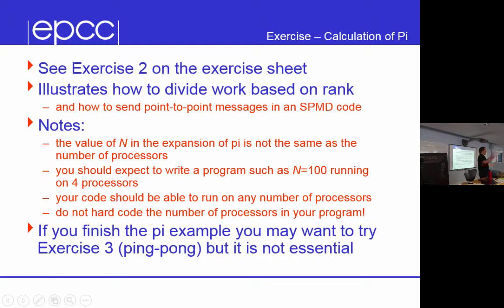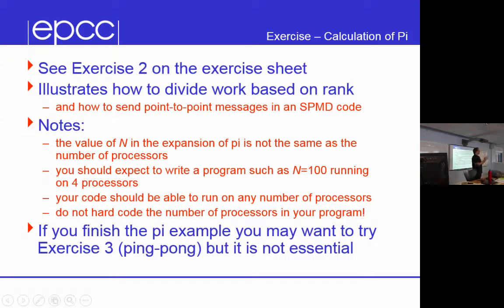We want to sum the subsums together. Everyone computes their own contribution to pi, then we nominate somebody — maybe rank zero — and you all send a message to that process, which adds them up. This illustrates that some people are senders and some are receivers, and you have to get that working. It also illustrates how to split up work based on your size and your rank.